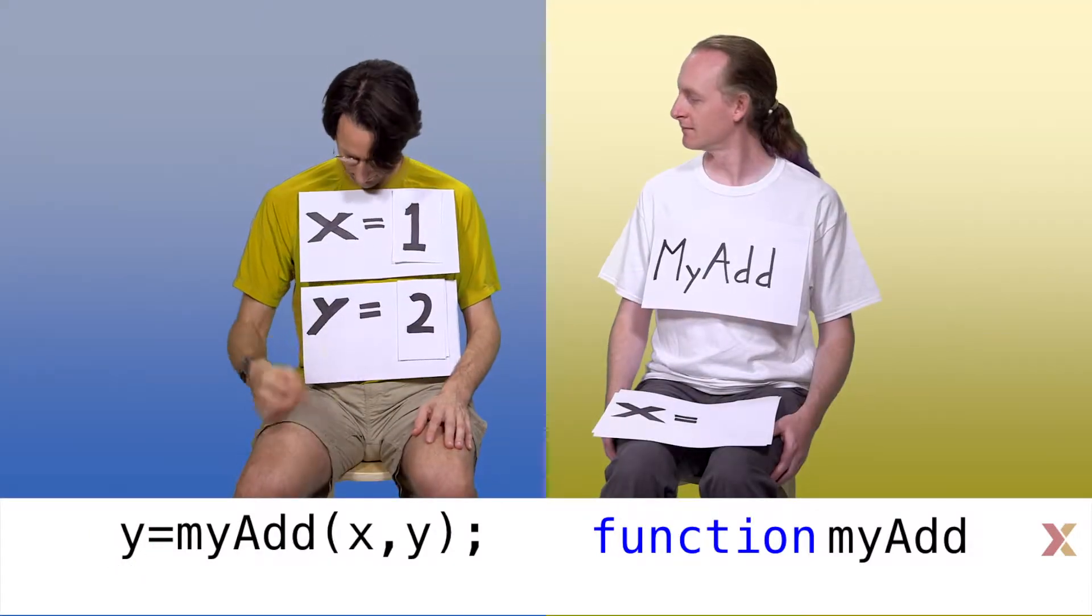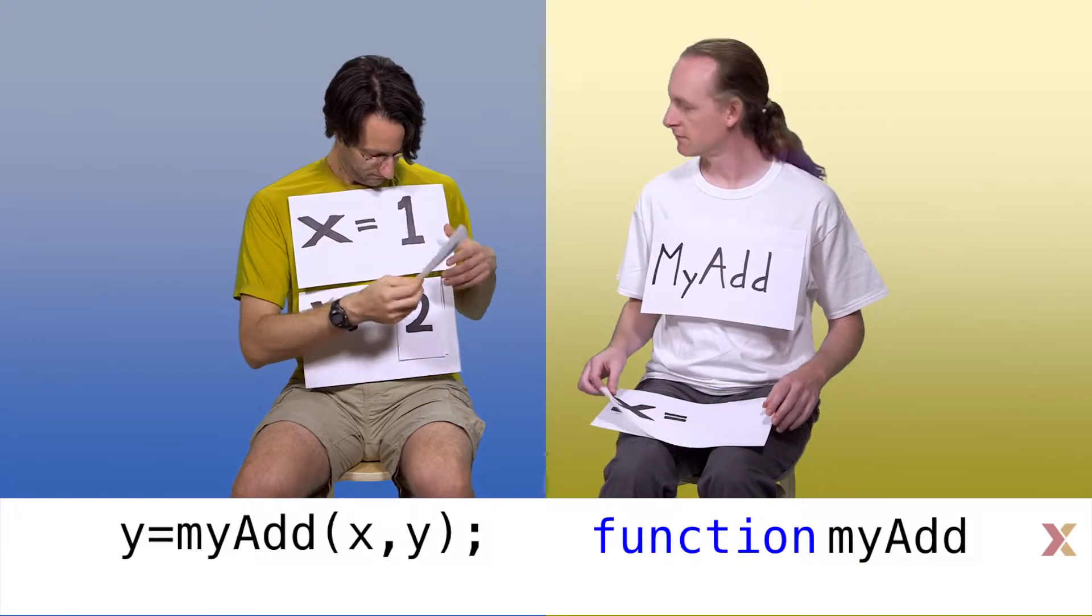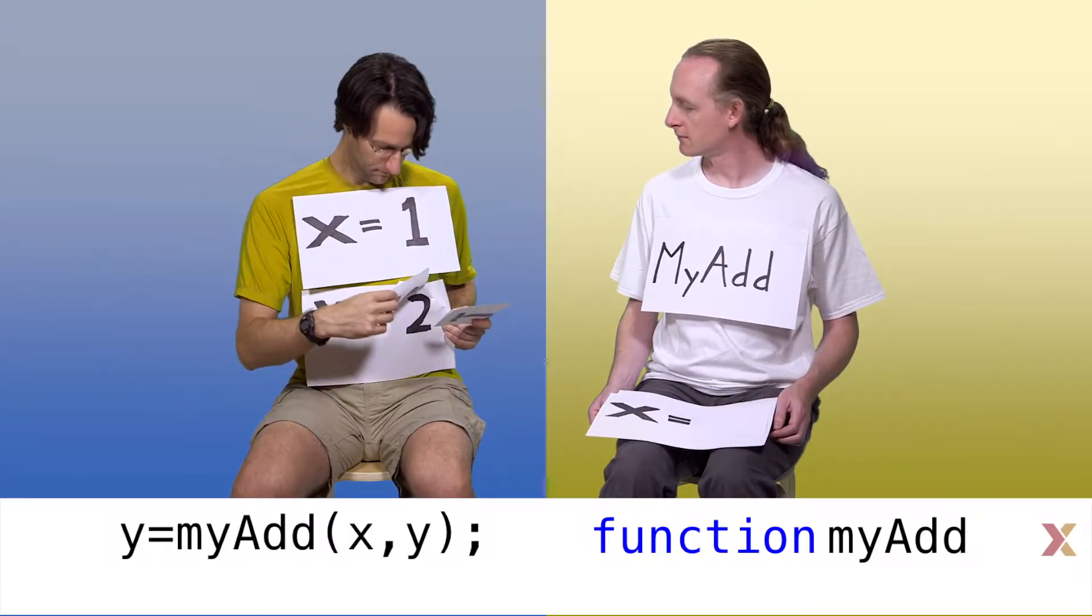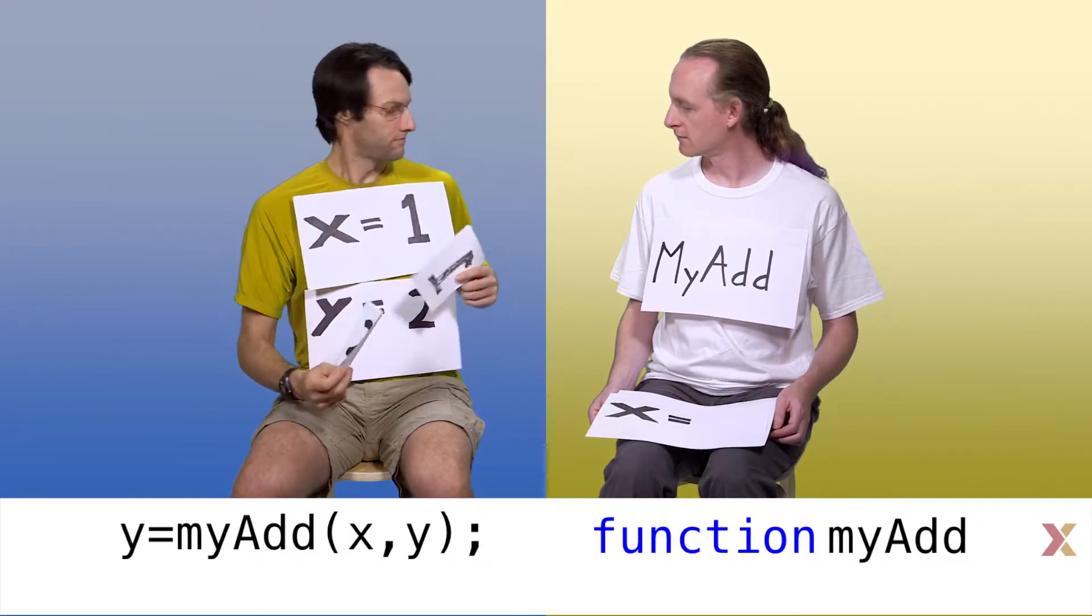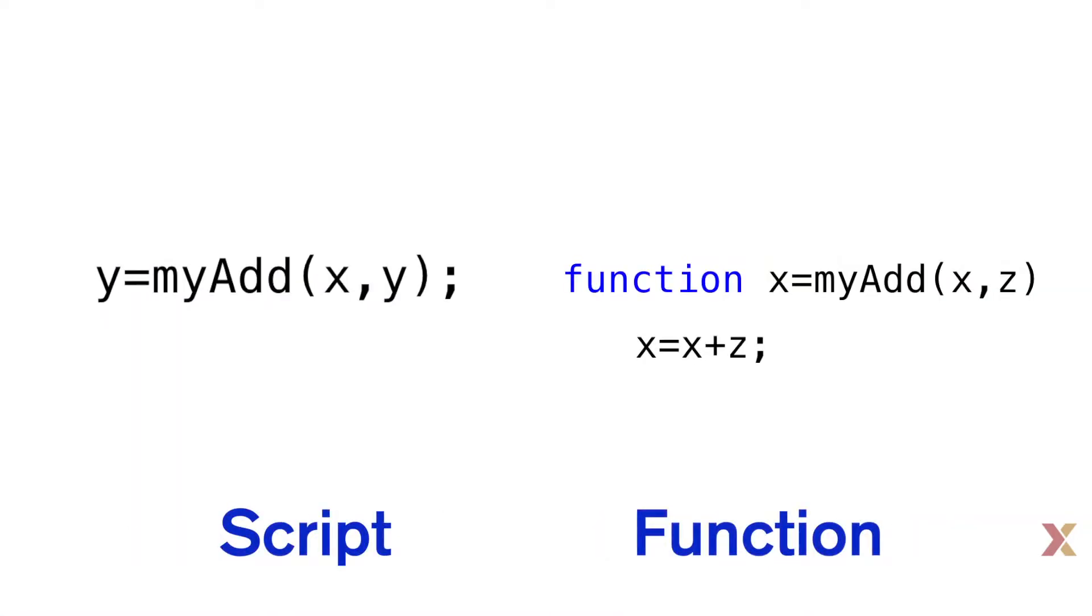Now let's go through this again in greater detail. The script is going to hand two values to the function myAdd. Let's peek in on what the function is actually doing. The function is declared with the line function x equals myAdd parentheses x comma z.